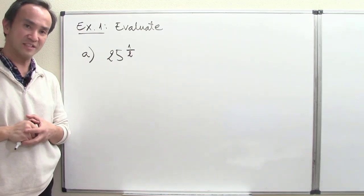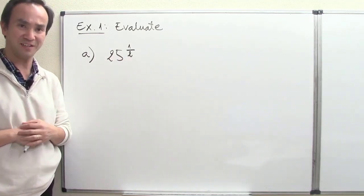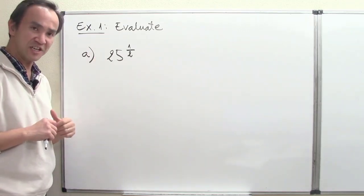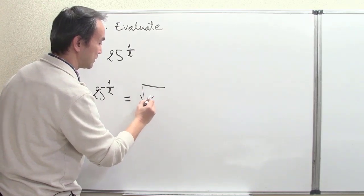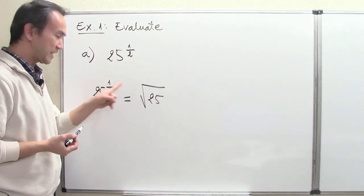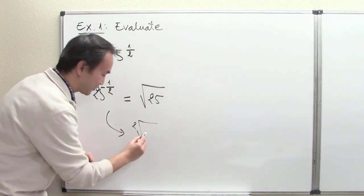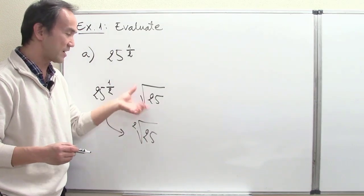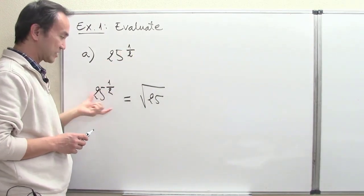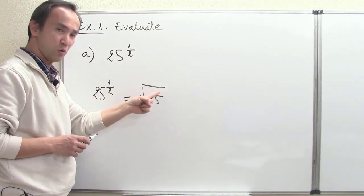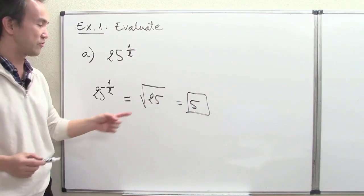Now we are ready to do a couple of examples. In Example 1, part A, we want to evaluate 25 to the power 1 half. From our understanding, 25 to the power 1 half is understood as the square root of 25 — technically the root of order 2 of 25, but by worldwide convention we write it as square root notation. So 25 to the 1 half equals the square root of 25, which equals 5.